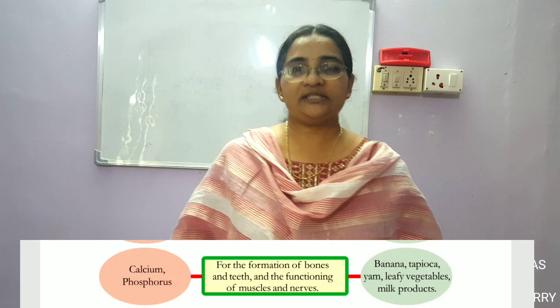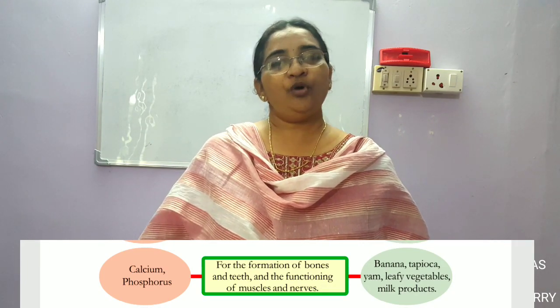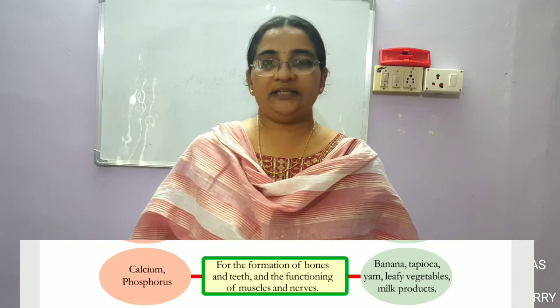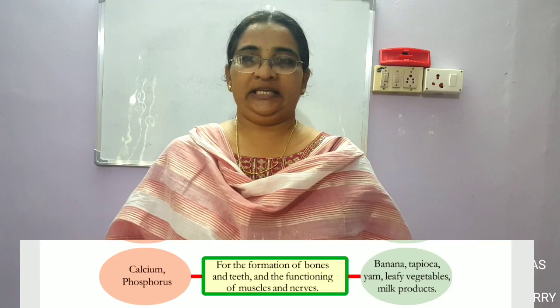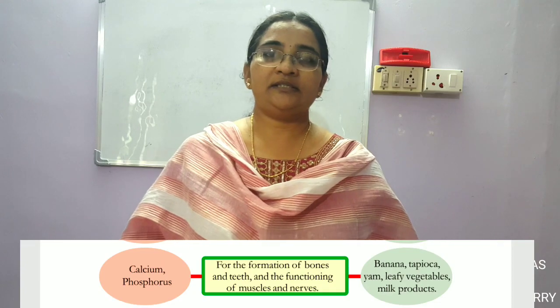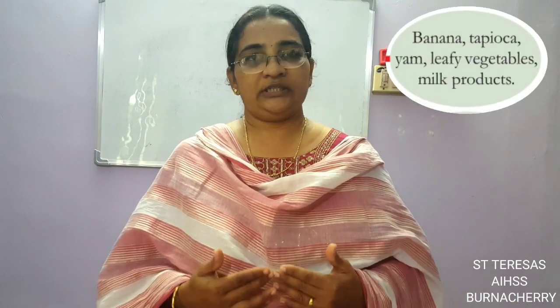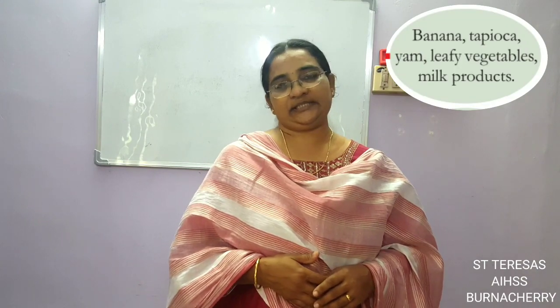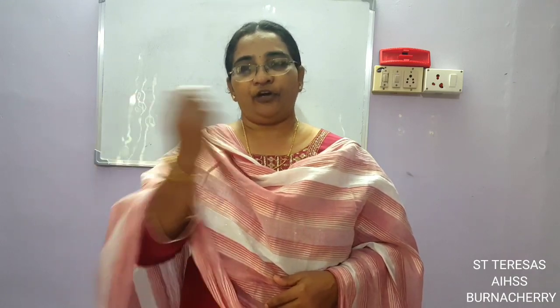Next in the table is calcium and phosphorus. Calcium helps in the formation of bones and teeth and for the functioning of muscles and nerves. If there is less calcium in our body, we have a tendency of breaking our bones. To get calcium and phosphorus, we need to eat banana, tapioca, yam, leafy vegetables, and milk products.